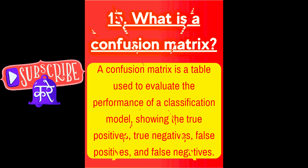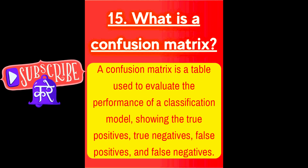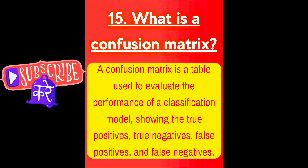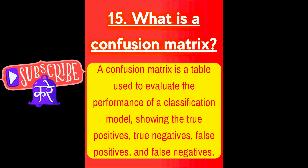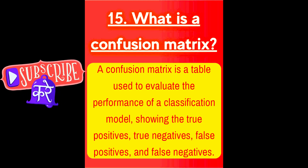Next question is, what is a confusion matrix? A confusion matrix is a table used to evaluate the performance of a classification model, showing the true positives, true negatives, false positives, and false negatives.